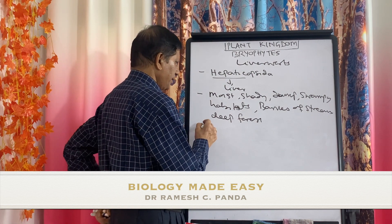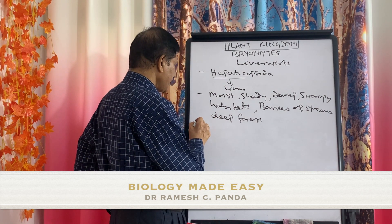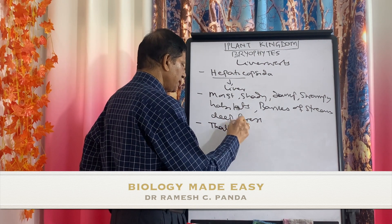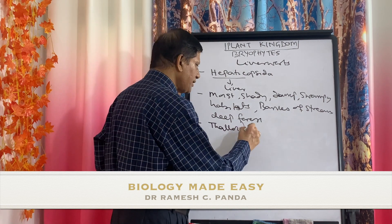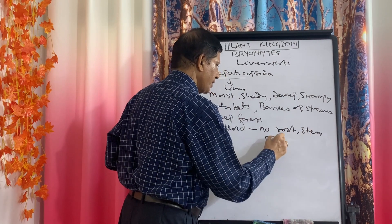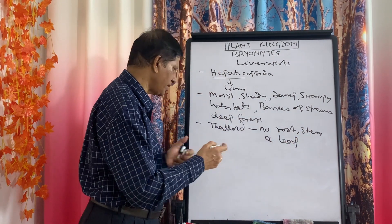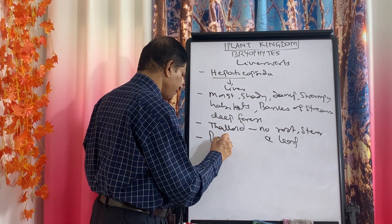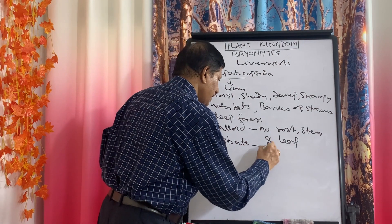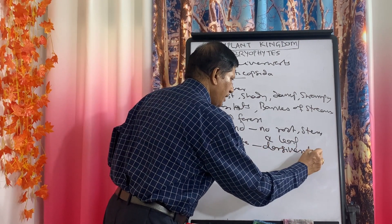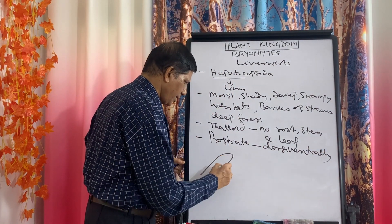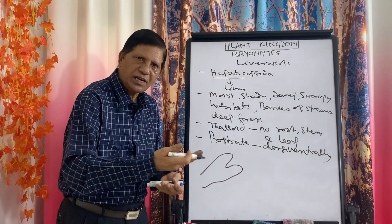The main plant body is always thalloid. Thalloid means there is no root, stem, or leaf. Because they are thalloid structures, they are prostrate — dorsiventrally prostrate on the surface of the ground.